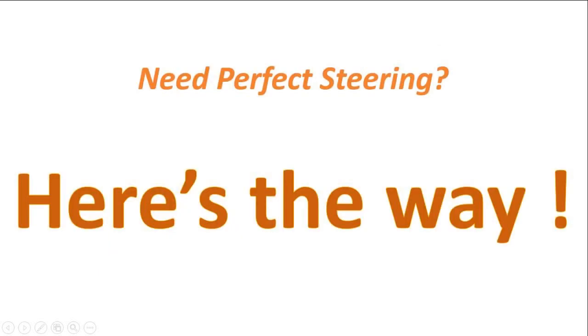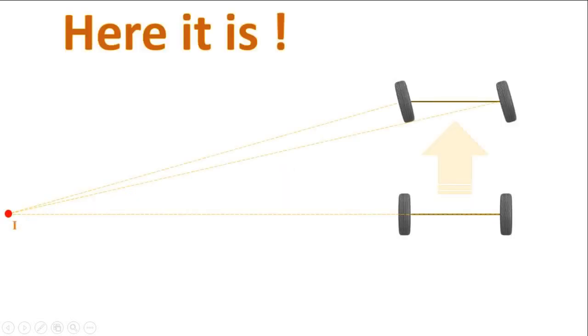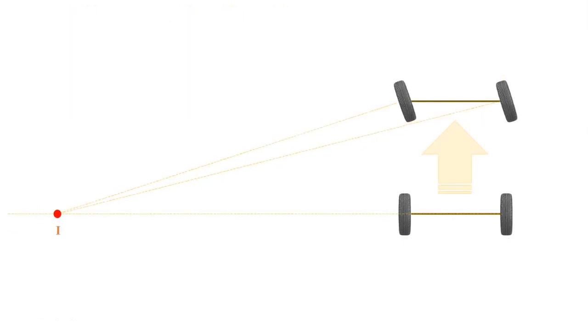Then what's the condition for perfect steering? All four wheels of your car must turn about the same point, called instantaneous center I. Also, it should not violate at any position.